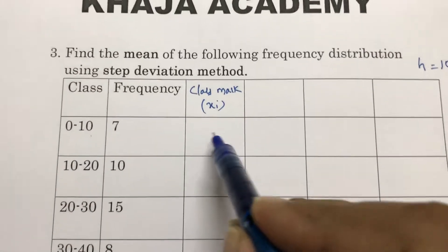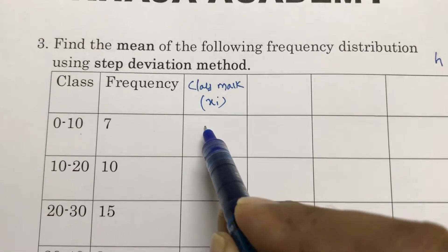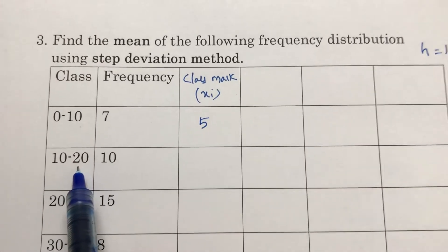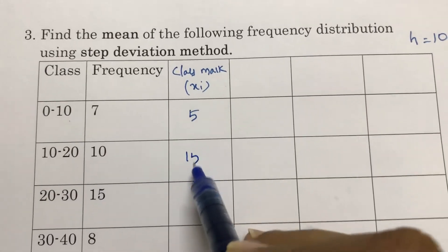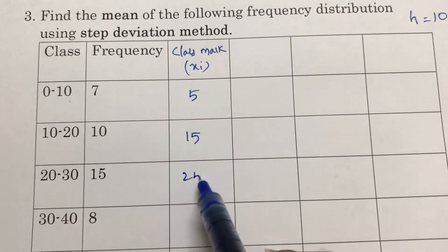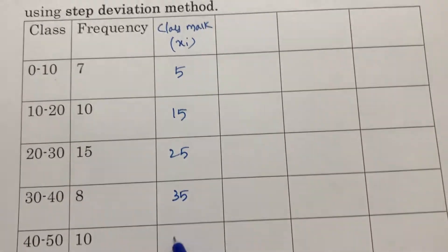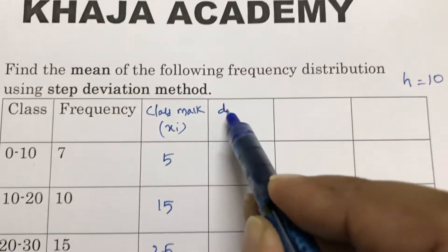So now class mark is 0 plus 10 by 2, that is 10 by 2, that is nothing but 5. 10 plus 20, 30 by 2, that is 15. Or you can add H value: 25, 35, 45. Here first we need to find di.